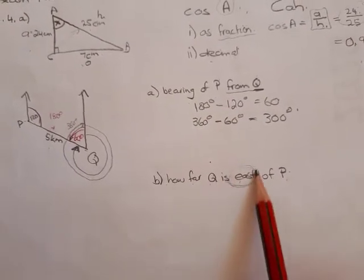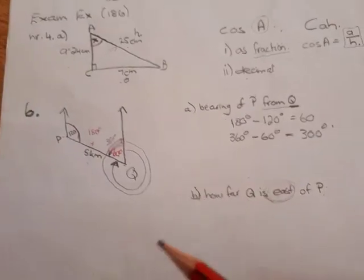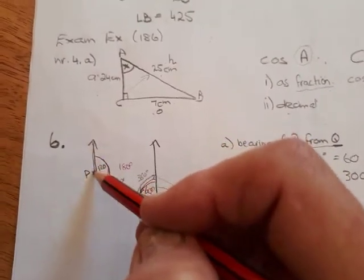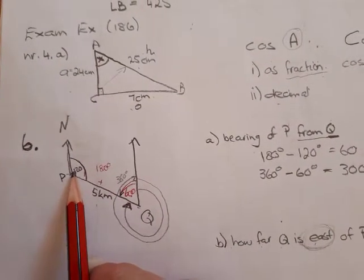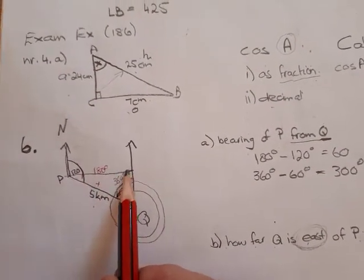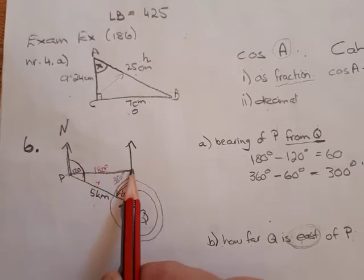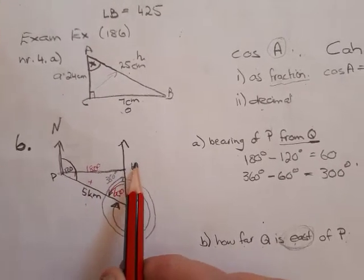So remember when you now go and look at this one, this is the north line. Now directly east would be that distance. Do you agree? That is directly east because that is what they ask you.